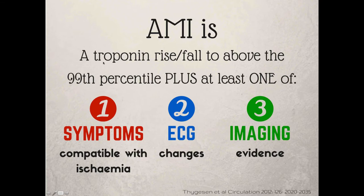There are a couple of important things about that. You have to have a rise or fall — this is important because it shows us that one single troponin level isn't enough to diagnose an acute myocardial infarction. You need to see a changing pattern; it could be a rise or it could be a fall, but it needs to change on serial sampling. So first important point: we need serial sampling.